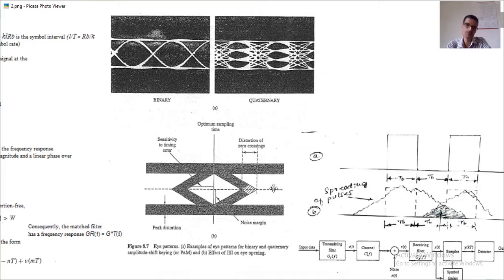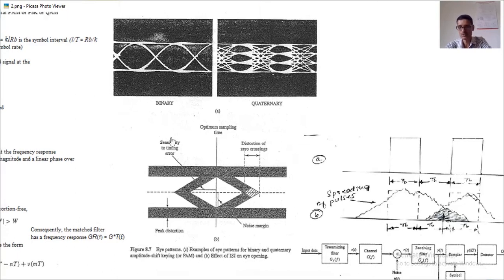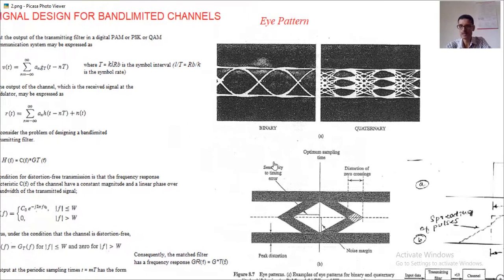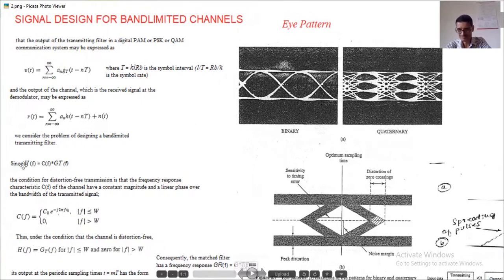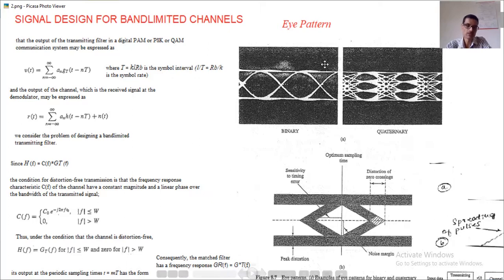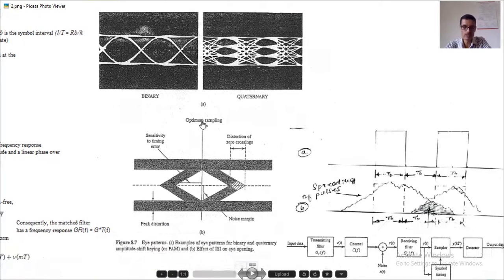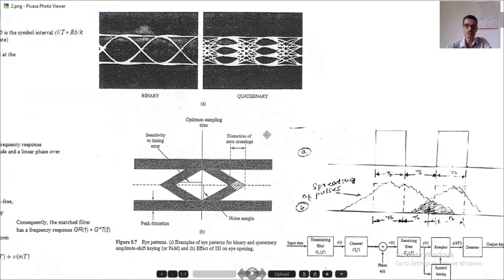The eye pattern is the best method to decide the sampling interval at the receiver. In this video I have explained the design of the transmitting filter, matching its response with the channel response, what the eye pattern is, and the concept of inter-symbol interference. Thank you for watching.